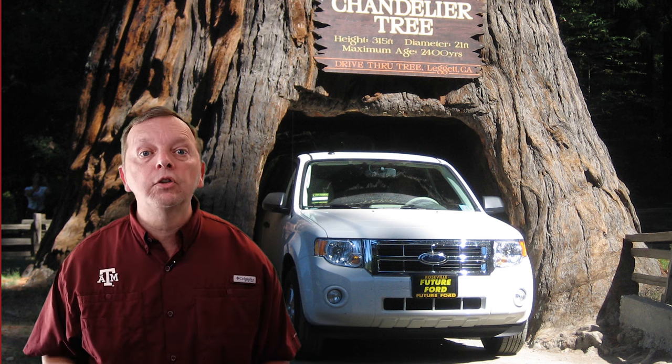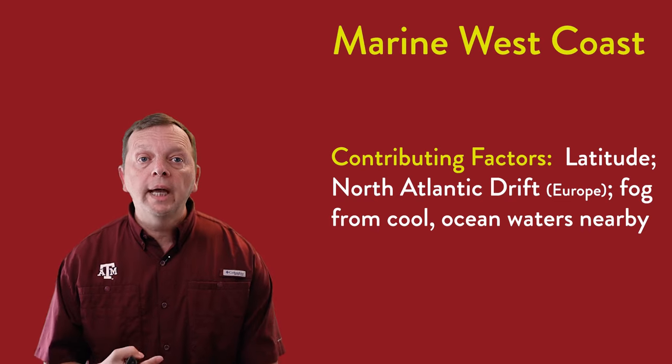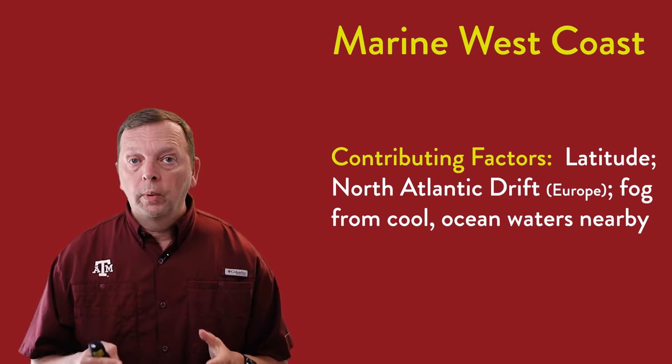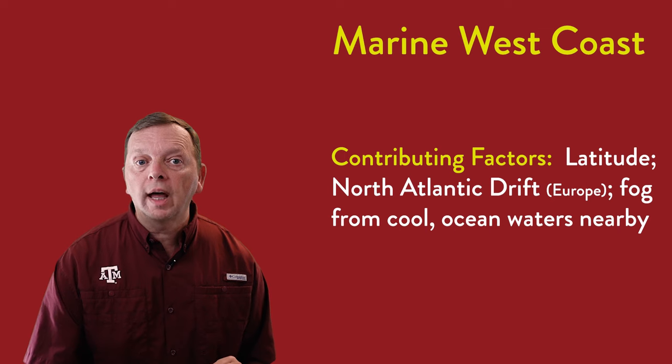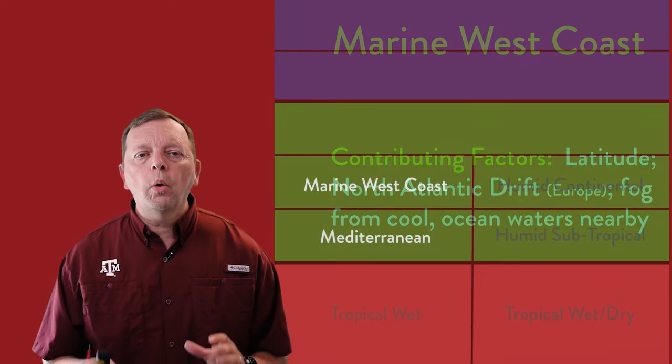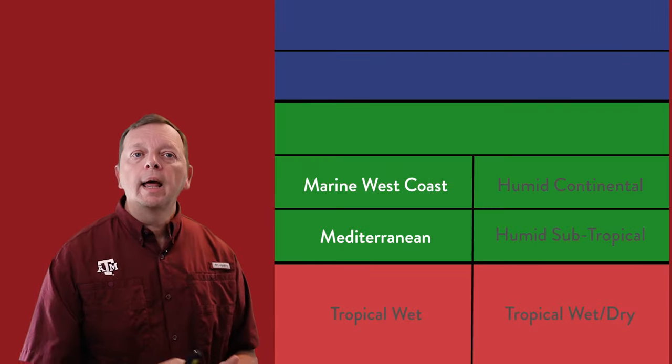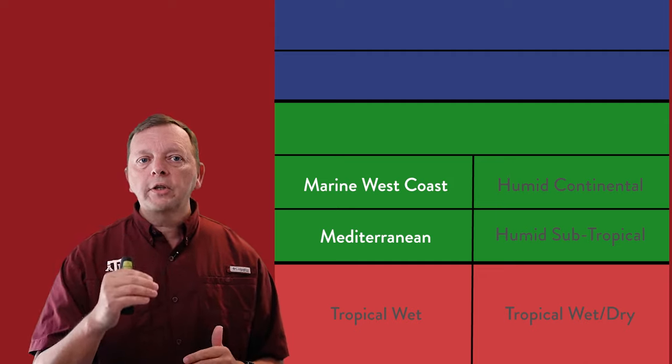In the redwoods, we find the tallest living things on Earth. Redwood trees can reach more than 360 feet tall, and to support such tall trees, they can have a diameter of 24 feet. Latitude is a contributing factor to the marine west coast climate, and the North Atlantic Drift also helps bring this climate to northwestern Europe. So our west coast climates are the Mediterranean and the marine west coast climates.